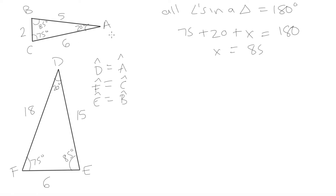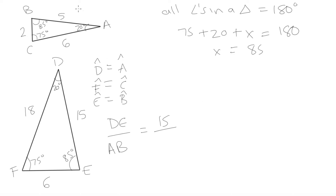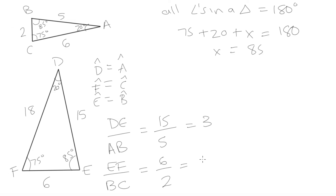Now we look at the ratios of corresponding sides. Side DE and its corresponding side AB both connect the 20-degree and 85-degree angles. DE over AB equals 15 over 5, which equals 3. For sides EF and BC: EF over BC equals 6 over 2, which also equals 3.